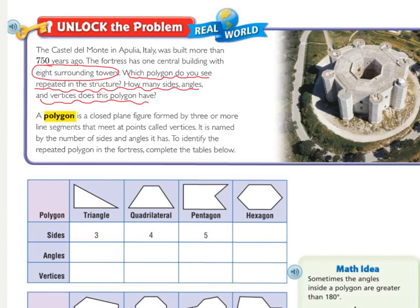One, two, three, four, five, six, seven, eight. So we need to remember that a polygon is a closed plane figure formed by three or more line segments that meet at points called vertices. It is named by the number of sides and angles it has. And to identify the repeated polygon in the fortress, we need to complete the tables below.